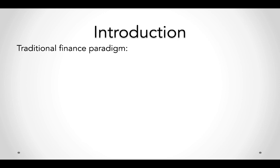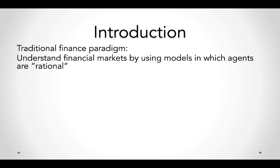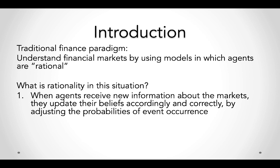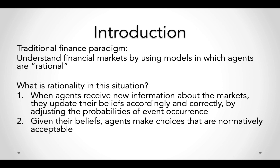In traditional finance, there's a paradigm for understanding financial markets using models in which agents are rational. Rationality here means that when agents receive new information, they update their beliefs correctly by adjusting the probability of event occurrence — essentially using Bayes' theorem. And once they update beliefs, they make choices that are normatively acceptable, behaving in some sort of rational way. This is how things have been set up in financial markets.